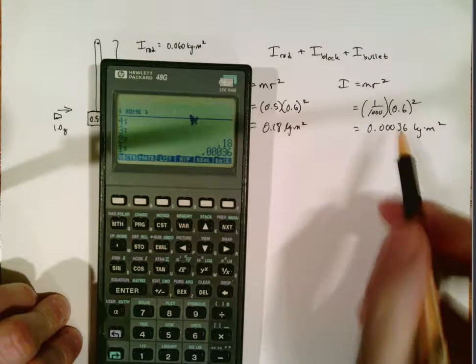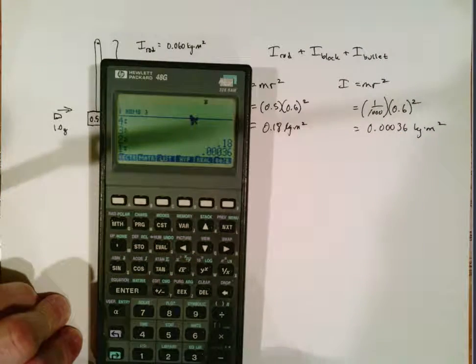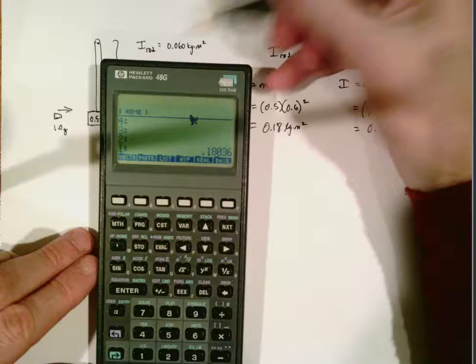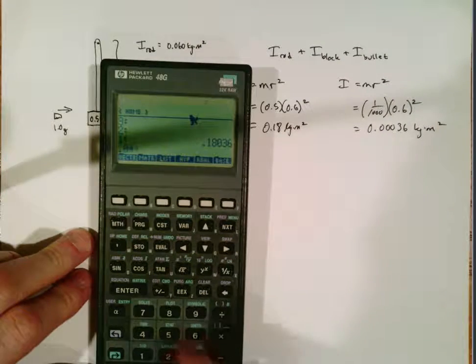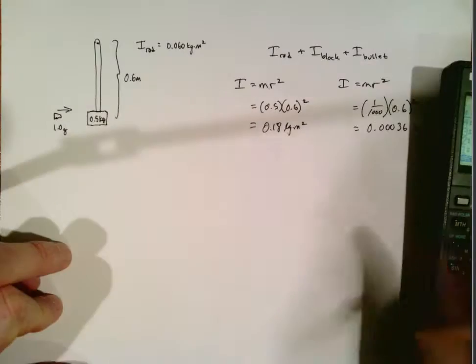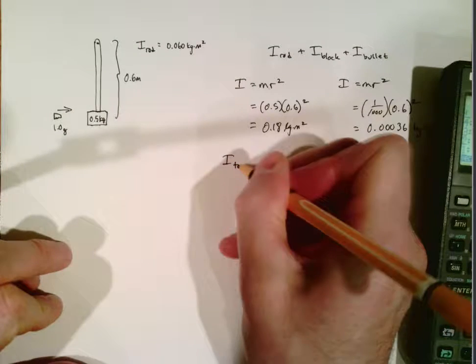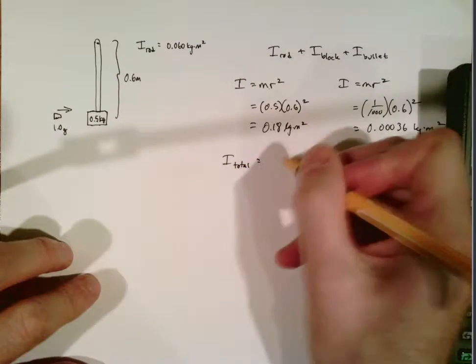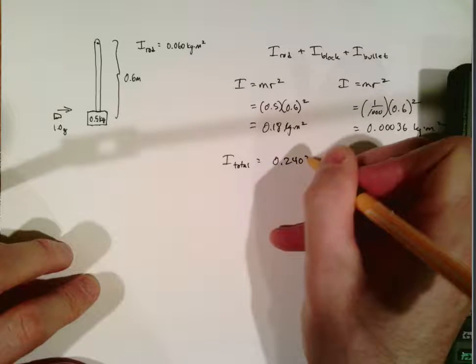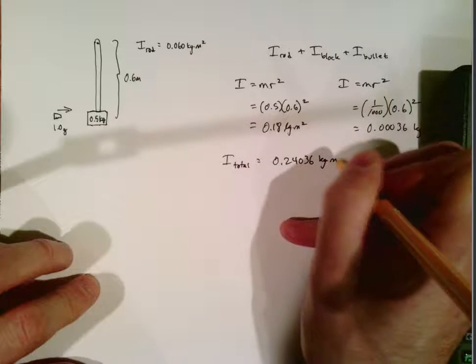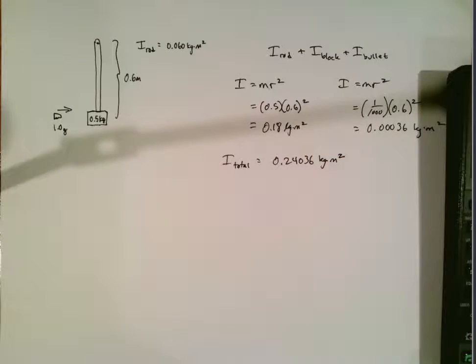So now I'm going to add this and this, the bullet and the block together, plus the rod, 0.06. And that gives me a total of 0.24, let's call that I total, of 0.24036 kilogram meters squared. And that's the answer to part A.